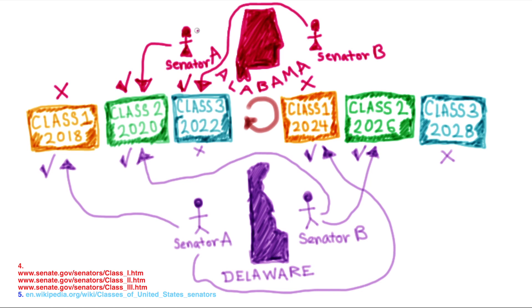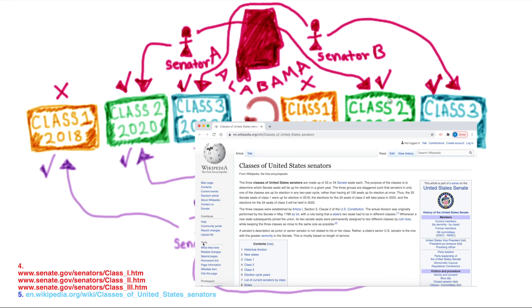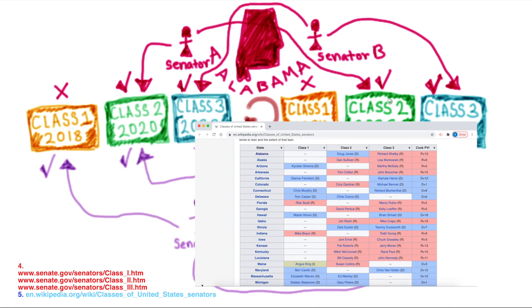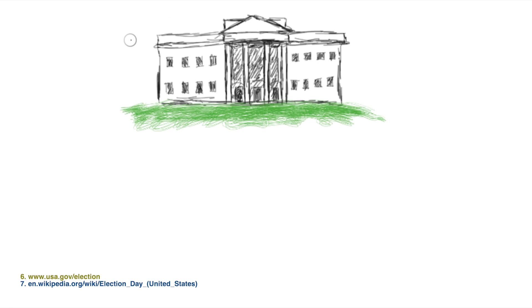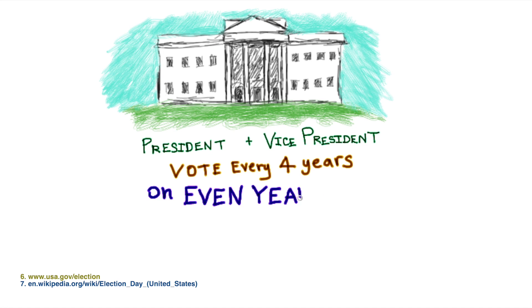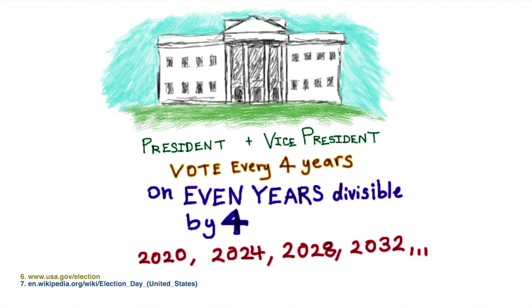Two elections on, one off. You can check which classes your state's senators are in and which years they will be up for election by going to the Senate.gov websites in the description, or by looking at the handy-dandy chart from the Wikipedia link, which makes it easier to understand. Finally, you will sometimes be voting for the President and Vice President, and this happens every four years. These are always on even years which are divisible by four: 2020, 2024, 2028, 2032, and so on.